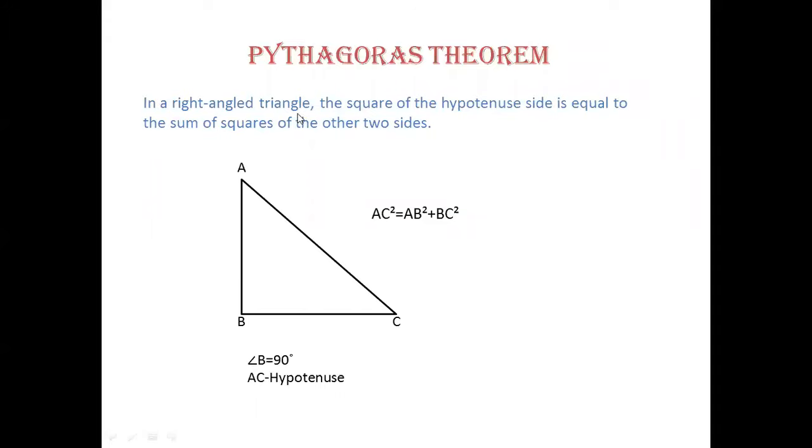In a right angle triangle, the square of the hypotenuse side is equal to the sum of the squares of the other two sides. It means the square of the hypotenuse side AC is equal to the sum of the squares of the other two sides.